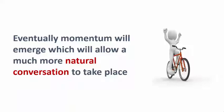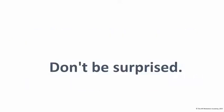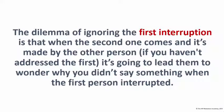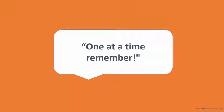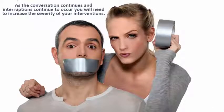Each has a turn to share and may have more than one turn. Structure the process so that it is not frustrating and there is balance, and eventually momentum will emerge allowing a much more natural conversation to take place. As participants start talking directly about their situation — what happened, how they felt, what they're thinking, and what they're needing — it is inevitable that one or the other is going to interrupt. Don't be surprised; be prepared. The dilemma of ignoring the first interruption is that when the second one comes, made by the other person, they'll wonder why you didn't say something earlier. I tend to make a note of the first interruption and say something simple and gentle — like a gesture with your hand. As interruptions continue, you will need to increase the severity of your interventions.